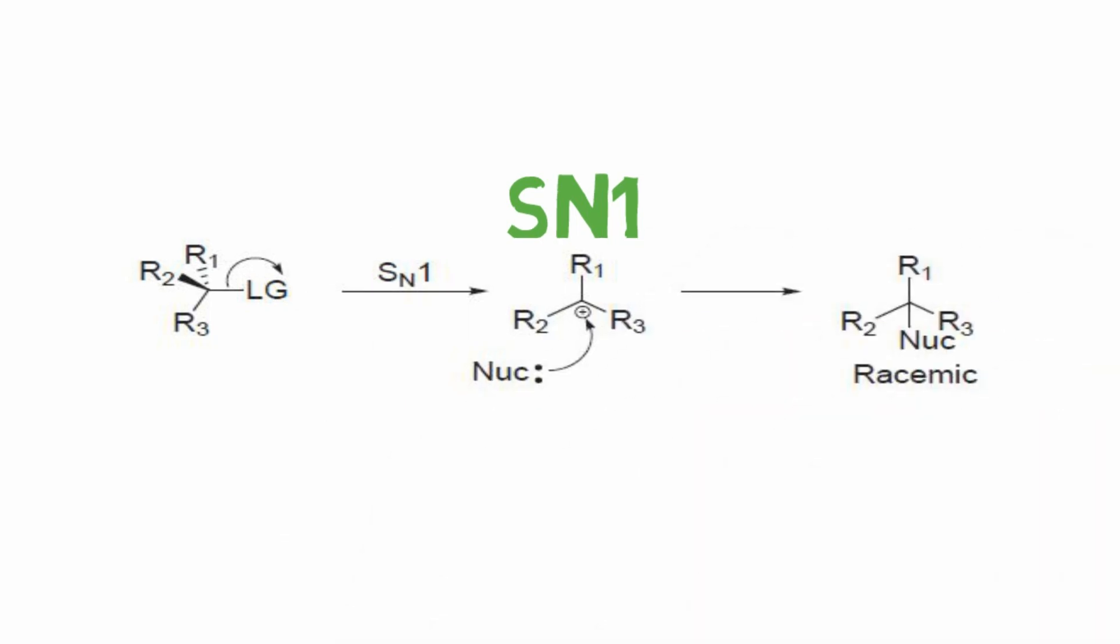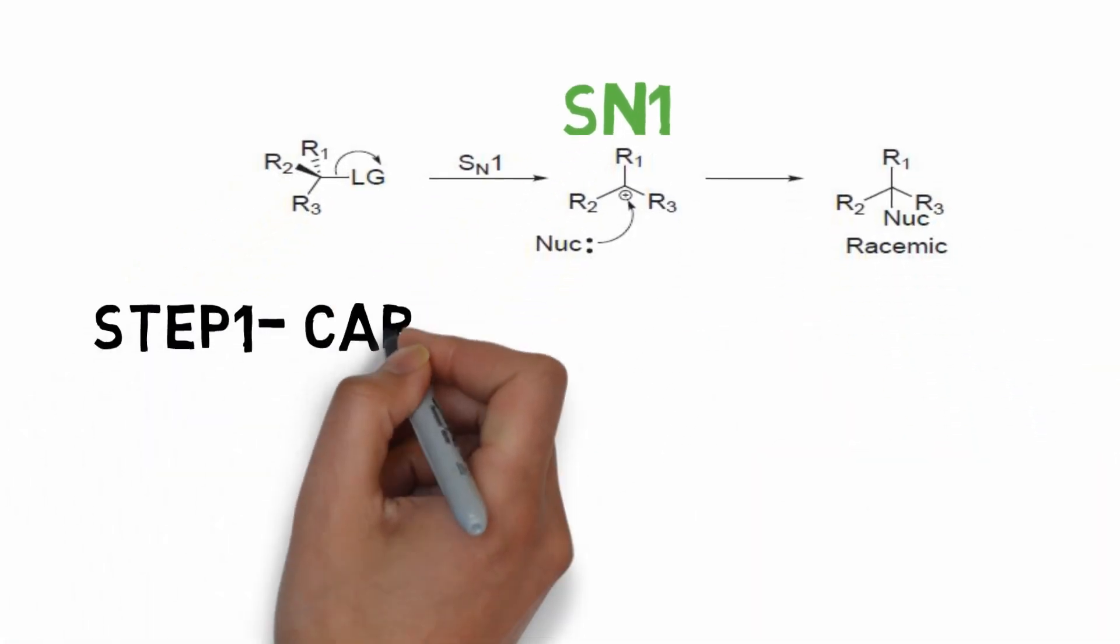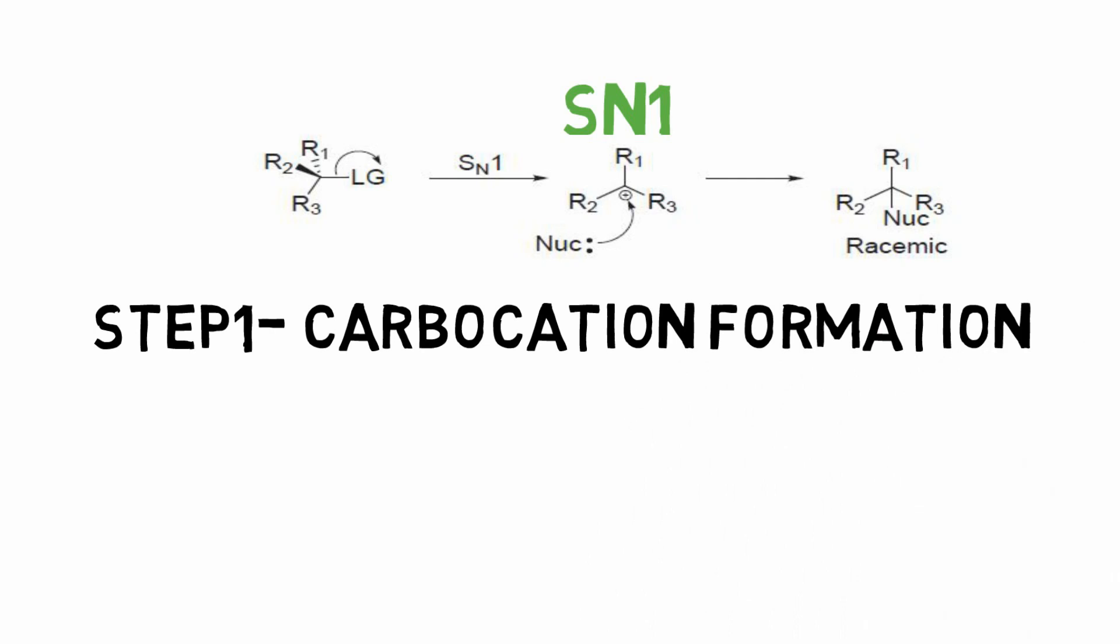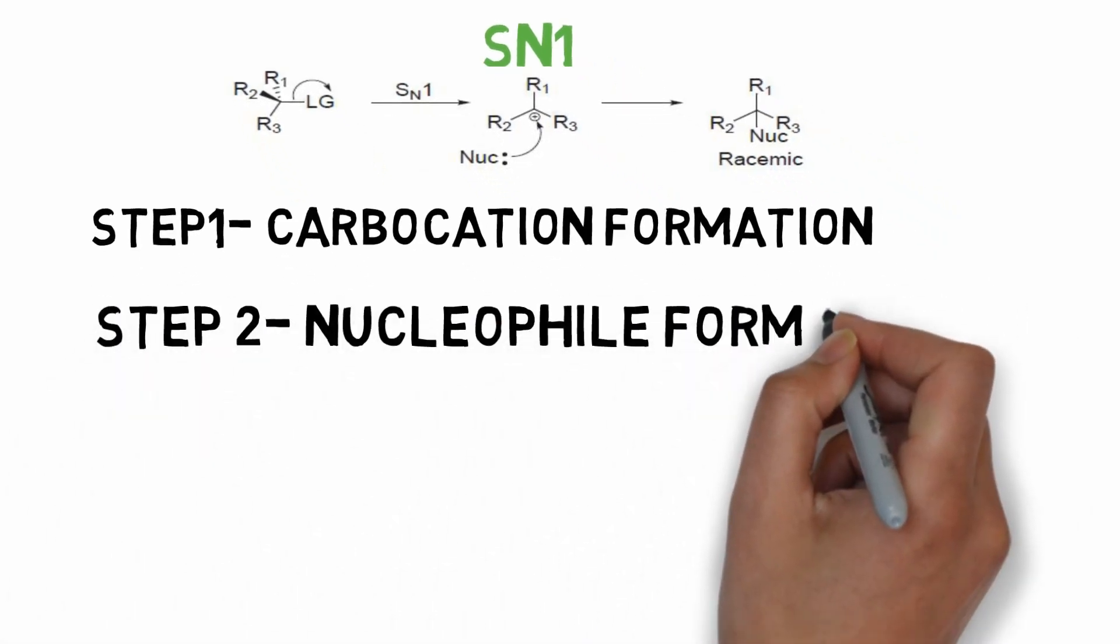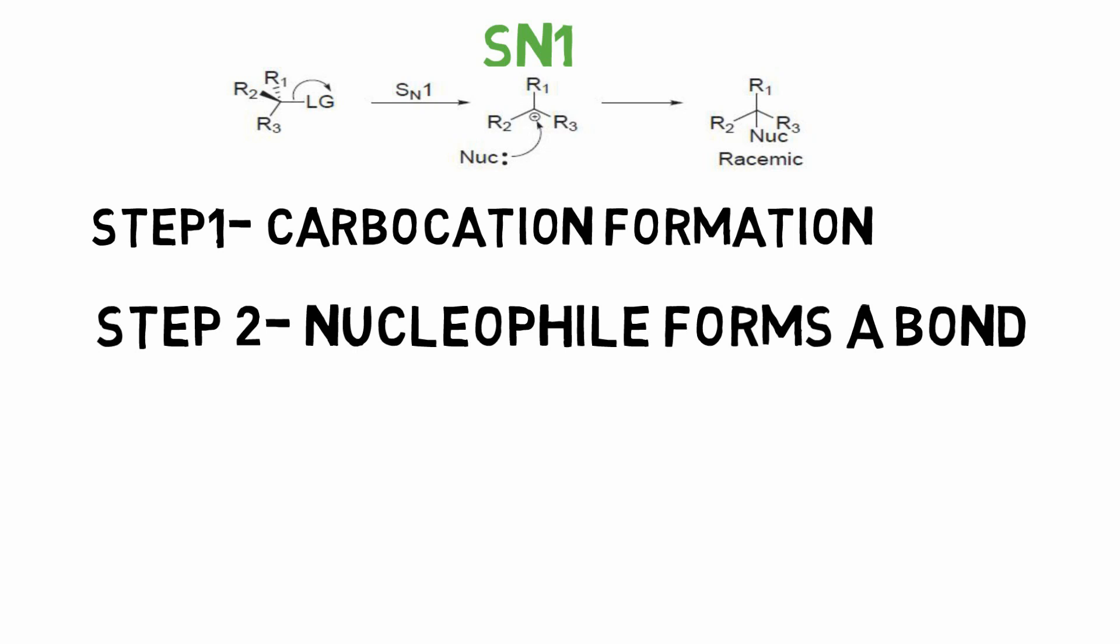Look at the following reaction mechanism for SN1. Here, two steps are involved. Leaving group is leaving by itself in the first step, and in the second step, nucleophile is attacking the positive carbon atom, which is called carbocation, to form a bond.